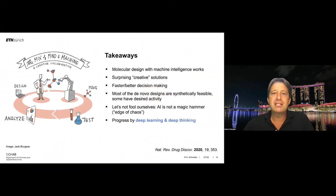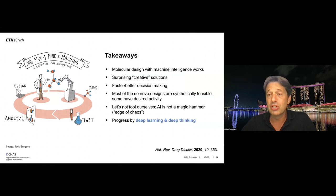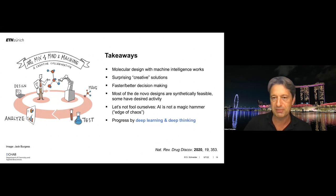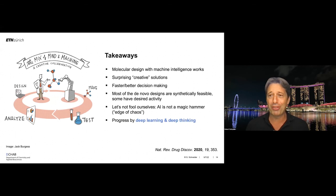With that I come to an end. I hope you learned today that molecular design with machine intelligence works — it is a matured technology you can use in your own laboratories. It creates surprising solutions and, most importantly, helps us make better decisions faster. Many computer-generated designs have the desired activity with a success rate of 50 to 80 percent. But AI is not a magic hammer — always be critical, and apply deep thinking together with deep learning to make sense of these computer-generated products.